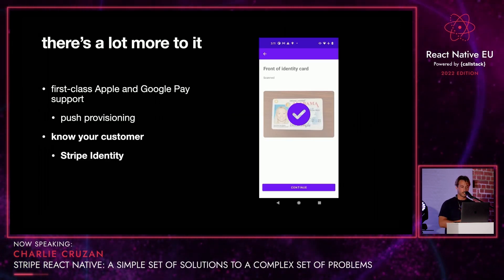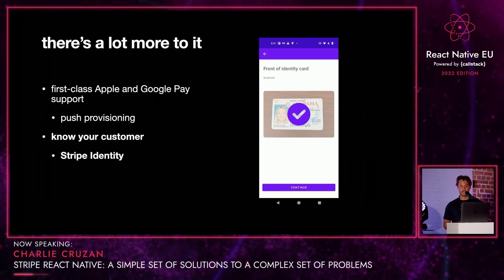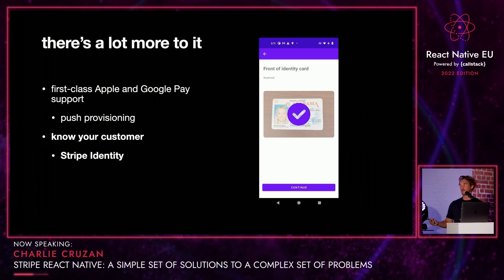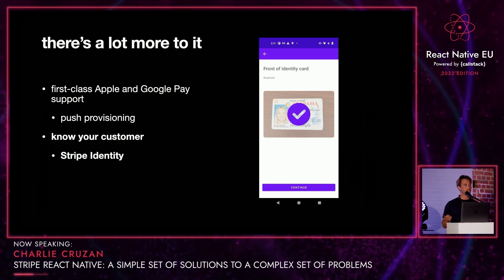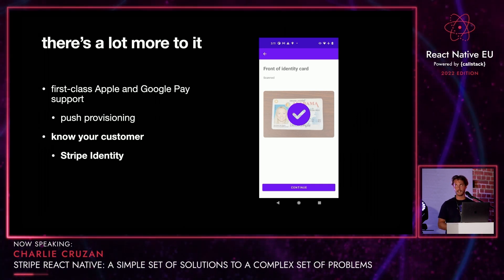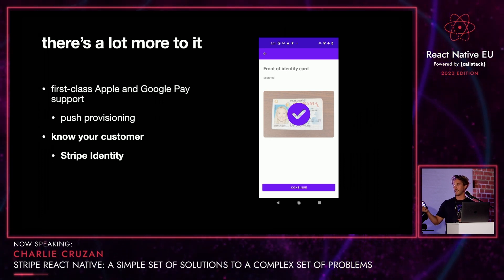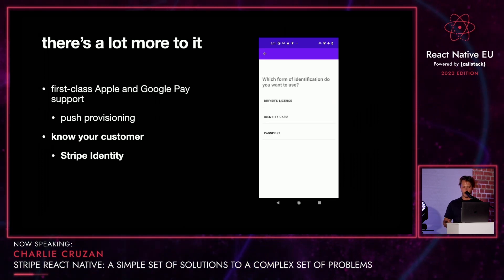Next up, we have a new know-your-customer Stripe React Native library, which is Stripe Identity. This allows you to verify the identities of users using an ID card or a passport, something like that. This is really useful for anyone that's familiar with Stripe Connect. Let's say you have a ride-share platform and you want to verify your drivers — you would use Stripe Identity to scan their ID and let them use your platform.